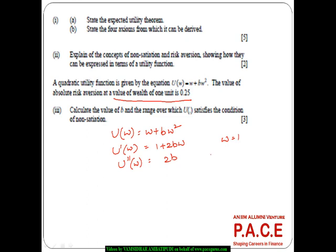So the value of absolute risk aversion at a value of wealth of 1, for W equal to 1, the absolute risk aversion, just recollect the formula, the absolute risk aversion for us is nothing but minus U double dash of W by U dash of W. So this is 0.25.